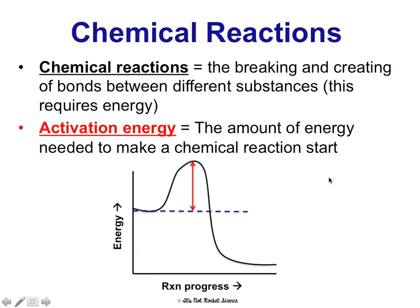I always look at this and think of a ball rolling down a hill. If a ball rolling down a hill is a chemical reaction, then in order to get that ball to the top of the hill, I have to put in a certain amount of energy. So that energy I have to put in to roll that ball to the top of the hill — that's my activation energy, and then it'll get going from there.